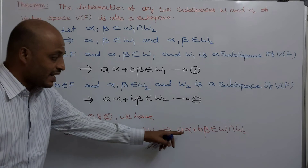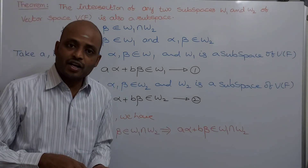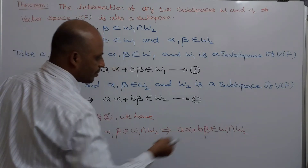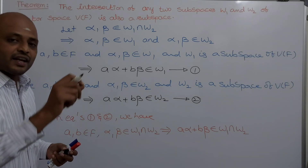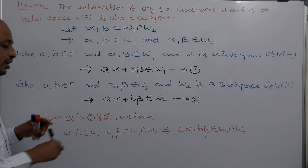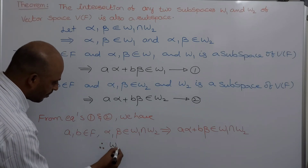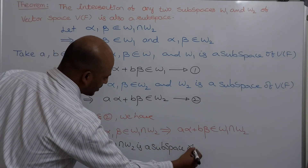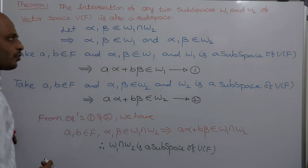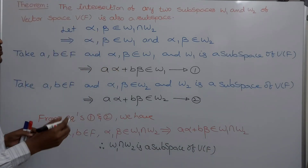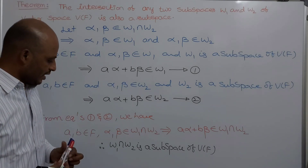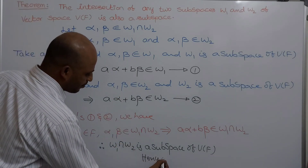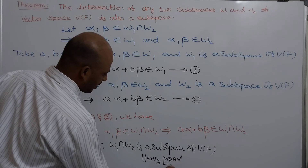Observe that this is the necessary and sufficient condition for a non-empty set to be a subspace. Therefore, w1 intersection w2 is a subspace of v of f. We conclude that the intersection of any two subspaces is again a subspace in the vector space. This completes the proof of the theorem.